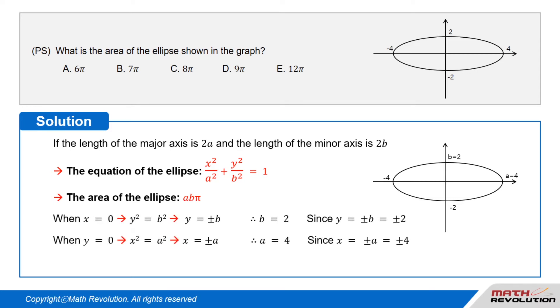When x = 0, we get y² = b², or y = ±b. Since y = ±2, we have b = 2.